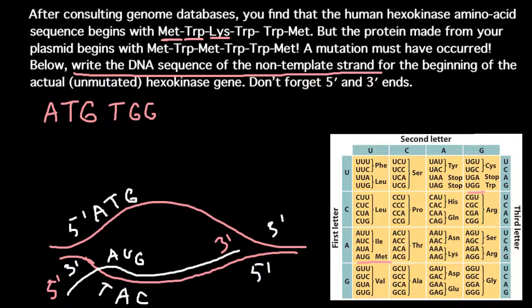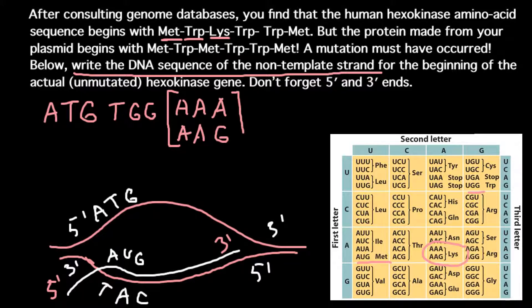Next we have lysine. Here is the sequence for lysine on the codon table. As you can see, we cannot be sure which sequence to choose — there are two sequences. So this can be A, A, A, or it can also be A, A, G. The next amino acid is again tryptophan. Only one sequence codes for tryptophan, and that is T, G, G on the non-template strand.